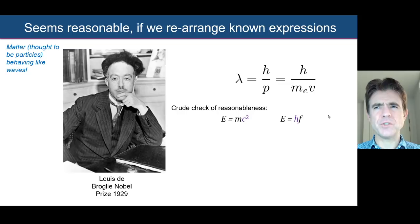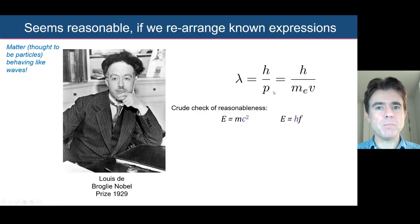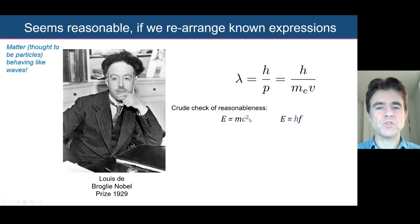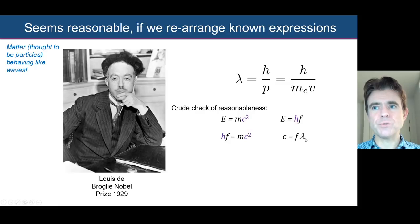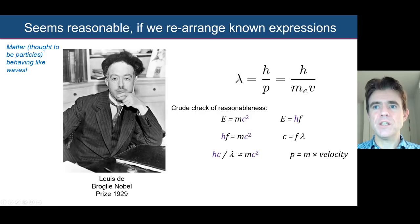Let's have a look at de Broglie's hypothesis and see if we can get some sense out of it. Lambda is equal to h over p — the wavelength of a particle is given by Planck's constant divided by the momentum of the particle. We can check its reasonableness by looking at some well-known relationships. Here's Einstein's energy equals mass times the speed of light squared, and here is the expression for photons: energy equals Planck's constant times the frequency of the light. Taking HF and substituting on the left-hand side, we have HF equals mc squared.